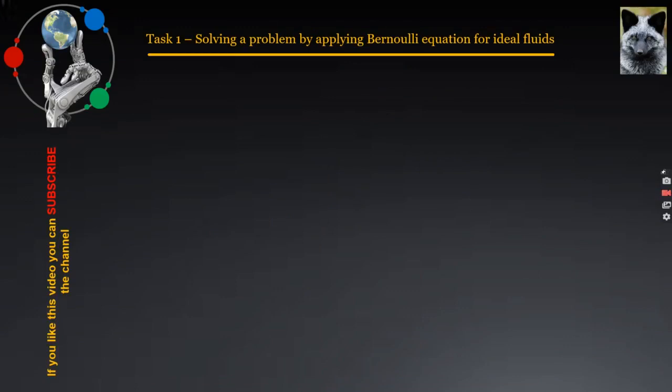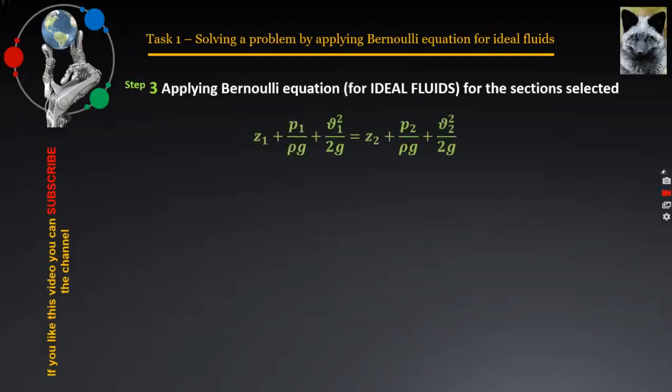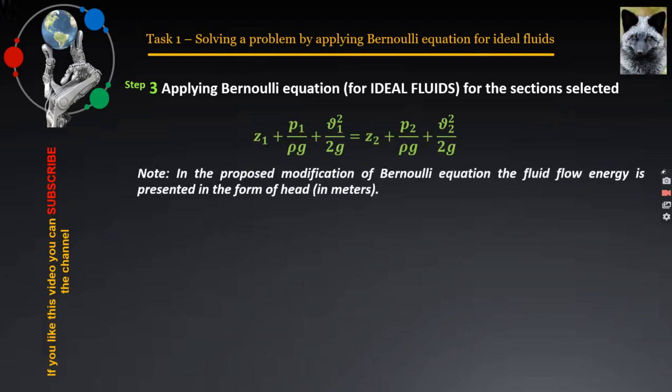The third step involves only copying the Bernoulli equation from the respective formula application. Make sure that the indices on the left and right of the equation match the way you mark the two sections. It should be indicated that the modification of the equation used to express the energy of the fluid flow is presented in the form of head.